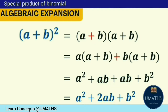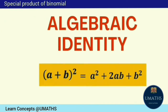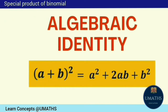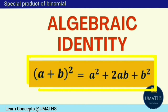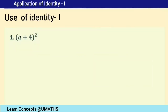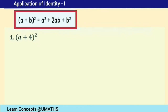We have just seen the algebraic expansion of the identity: a plus b, whole square, is equal to a squared plus 2ab plus b squared. Let us understand how to use this identity by solving a few examples.